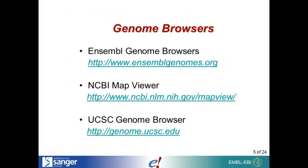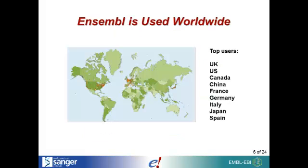There are three major genome browsers in the world for multi-species browsing: the Ensembl Genome Browser, NCBI Map Viewer, and the UCSC Genome Browser. We know that Ensembl is used worldwide — our top 10 users include the UK, the US, Canada, China, Japan, and more countries in Europe.